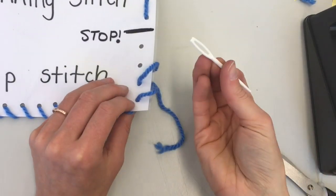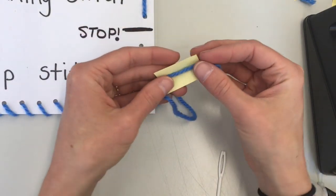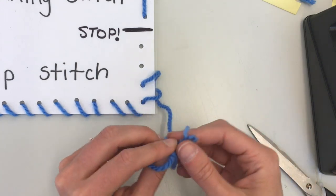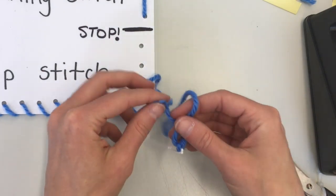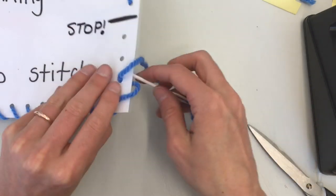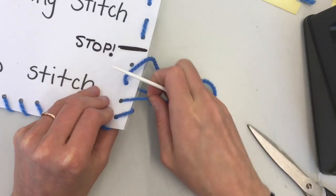Oops! I pulled so hard that the thread came out of the needle. I'll just re-thread it and tie the knot again. This time I'm going to try two knots so it's a little more secure, and I just keep going until I reach that stop line.